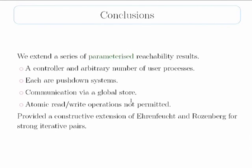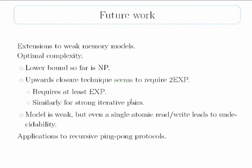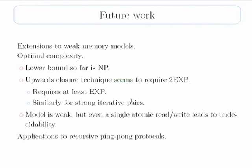To conclude: we have a parameterized reachability problem where we have a control process and arbitrary user processes, each being pushdown systems. If they communicate via a global store but cannot interact with the store atomically, then we have decidability. There are a number of things I'd like to continue from this work. The reason I thought of this in the first place was due to weak memory models — rather than the ideal interleaving model of concurrent processes, real processors do caching and other things, so what actually happened is not necessarily an interleaving. Unfortunately, this problem is even harder than normal pushdown model checking, so there's still work to be done.